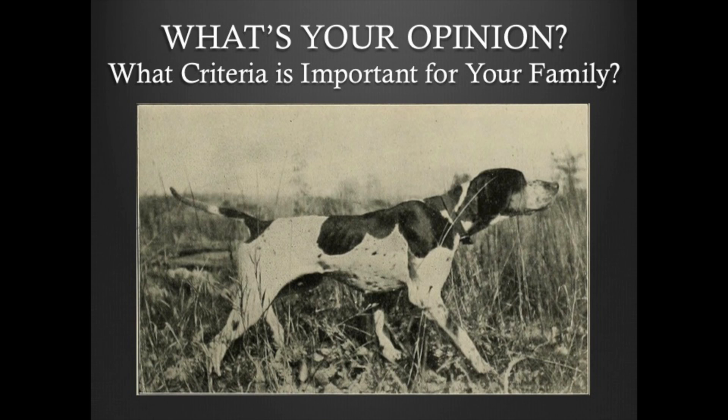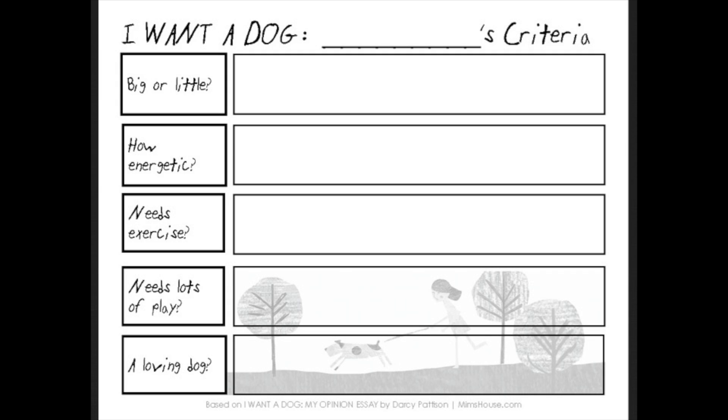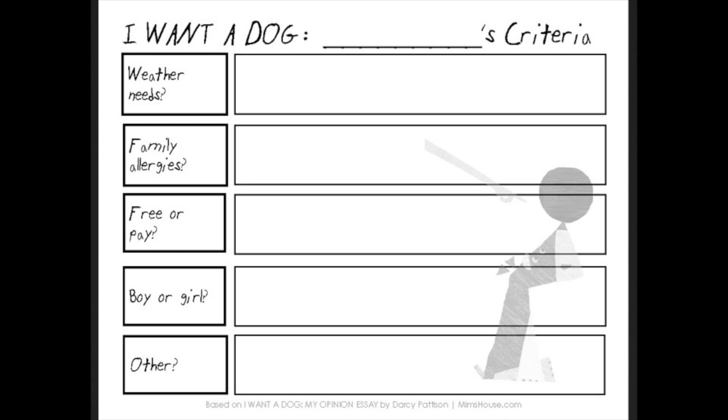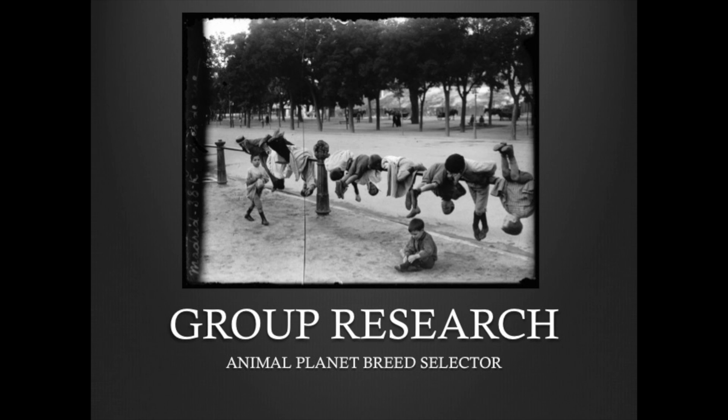Now it's time for a discussion. The students should talk about what criteria are important for their family. We have three worksheets they can use as they do it, going through the different criteria the book uses and adding a few extra. Ask the students if they can think of any other criteria that would be important for their particular family.